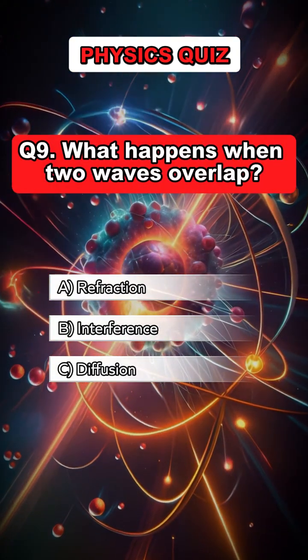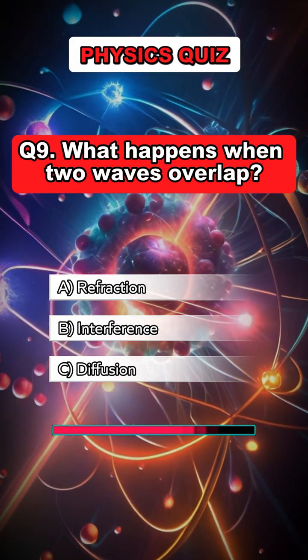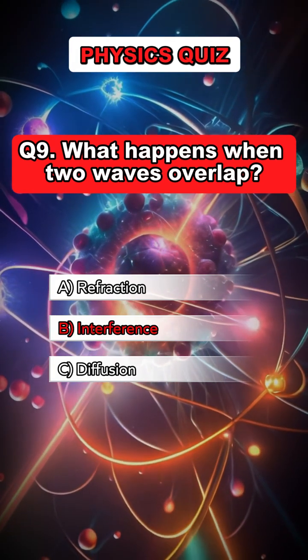Question 9. What happens when two waves overlap? Answer B. Interference.